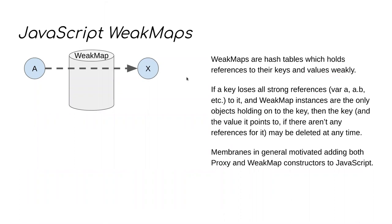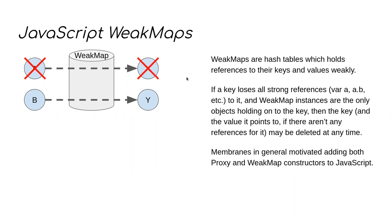Another critical component of membranes is the WeakMap. Basically, a WeakMap is a hash table or dictionary that holds references to their keys and values weakly. We can add key-value tuples to a WeakMap at any time. For a given WeakMap, the keys are unique, but many keys can point to the same value. If the only references to a particular key are in WeakMaps, then no JavaScript code in the world can get that key out of any WeakMap — the key is unreachable and subject to deletion. If the key is also the only way to reach a value, then the value is also subject to deletion. The concept of membranes is why we have proxies and WeakMaps in the first place.